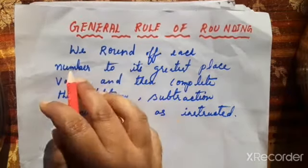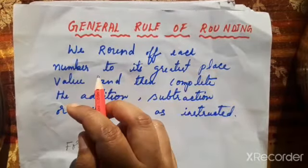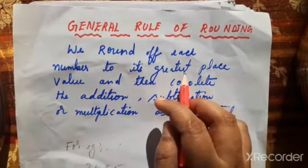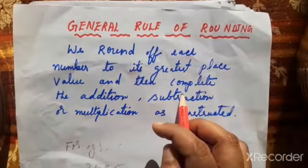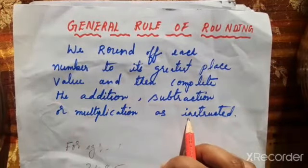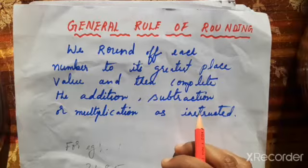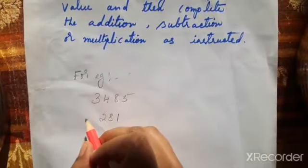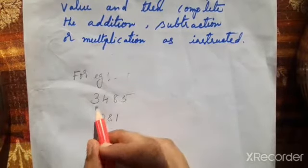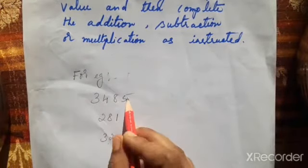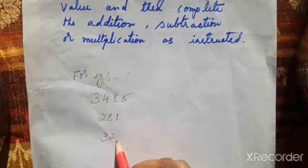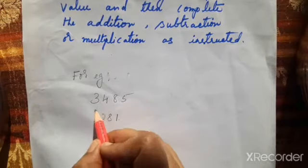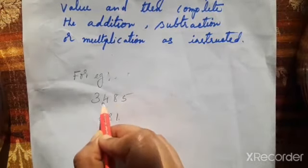The next question is related to rounding off numbers using the general rule. The general rule is: we round off each number to its greatest place value, and then complete the addition, subtraction, or multiplication as instructed.